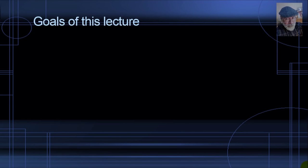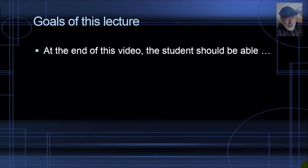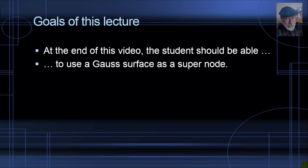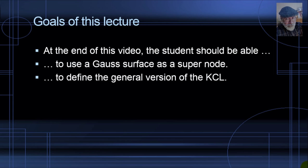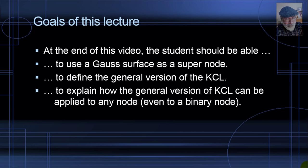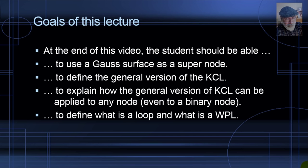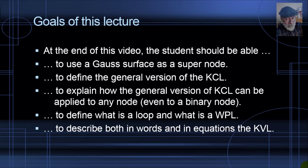I expect that every viewer at the end of the video should be able to use a Gauss surface as a super node, define the general version of KCL, explain how the general version of KCL can be applied to any node even to a binary node, and define what is a loop, what is a windowpane loop, and describe both in words and in equations what is the KVL.